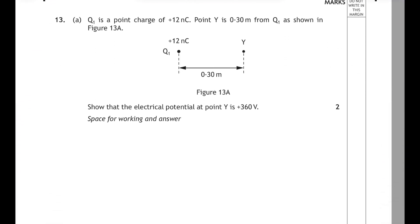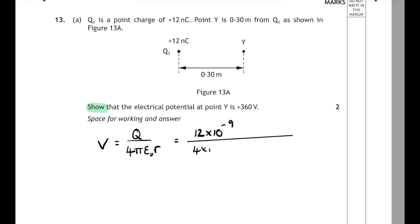Question 13: Q1 is a point charge of +12 nanocoulombs, and point Y is 0.30 metres from Q1. We have to show that the electrical potential at point Y is +360 volts. Starting from the relationship sheet: V = Q / (4πε₀R). Substituting in Q = 12×10⁻⁹, ε₀ = 8.85×10⁻¹², and R = 0.3 metres gives +360 volts.